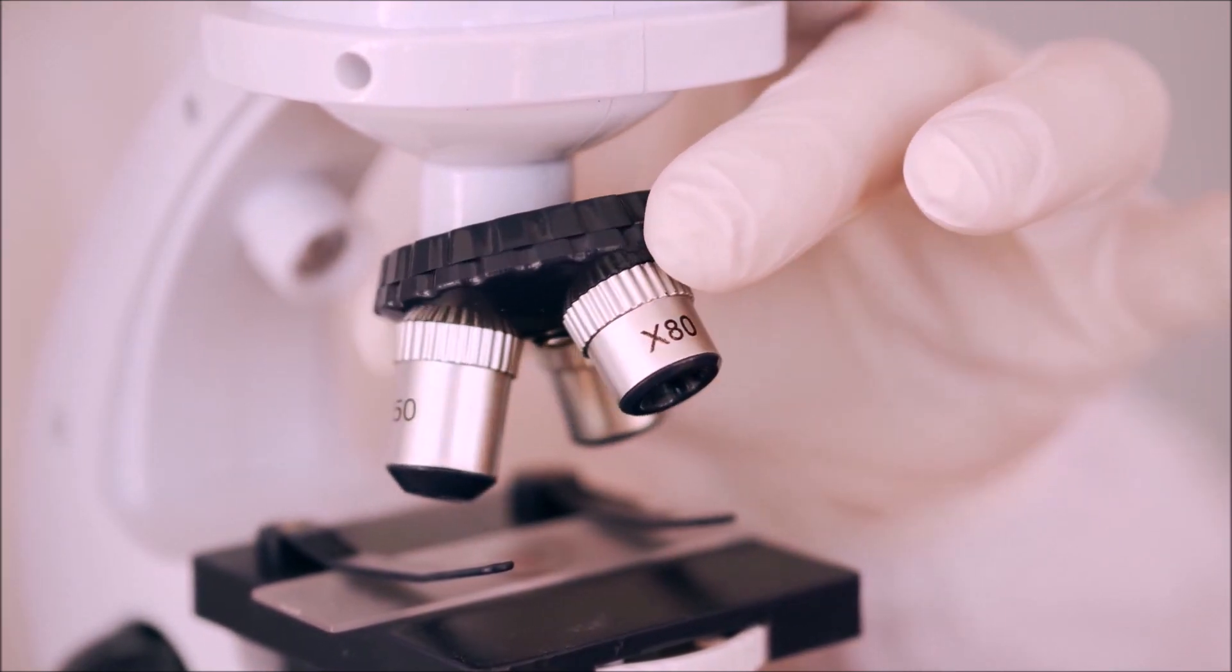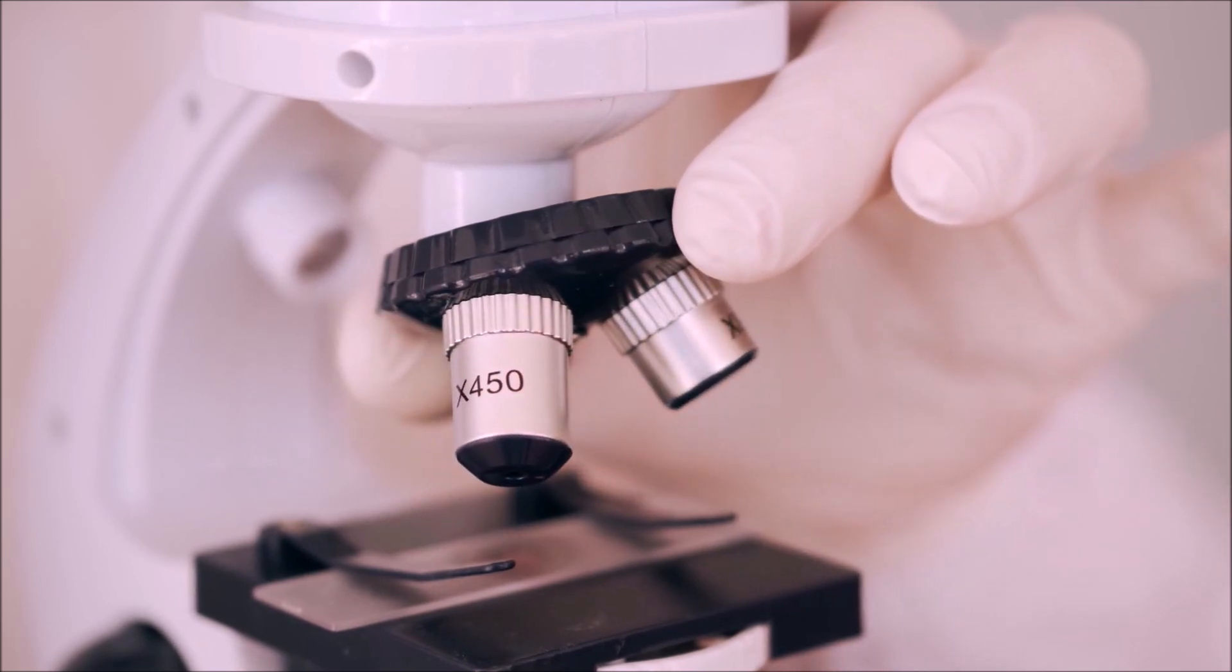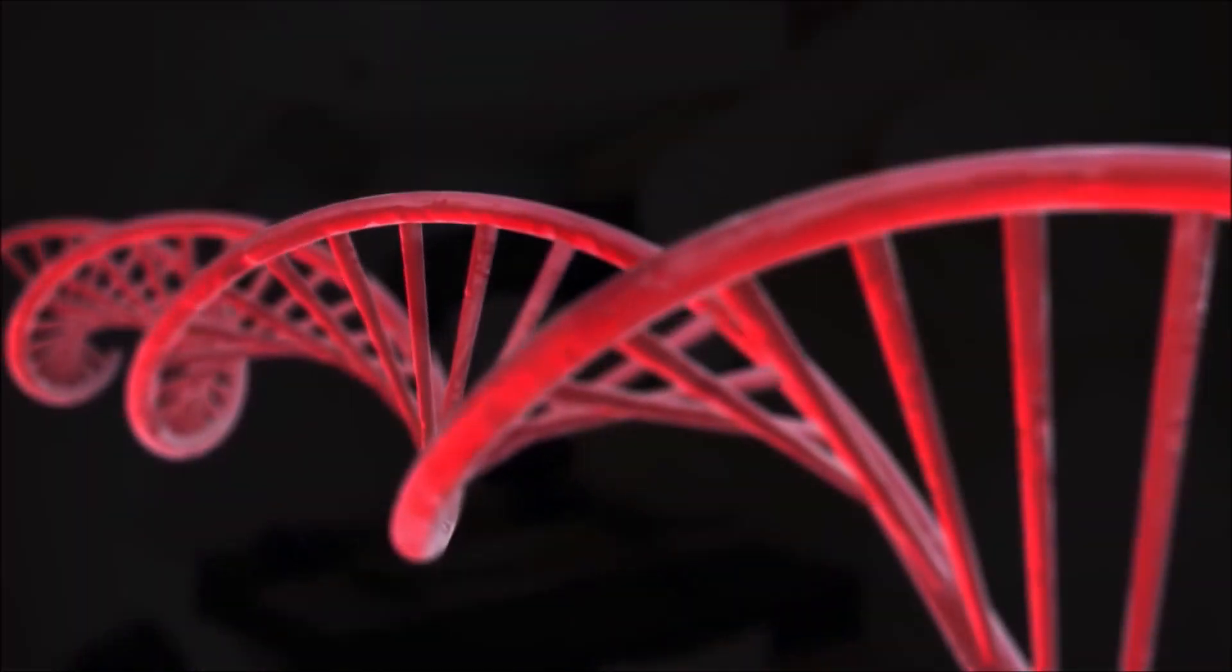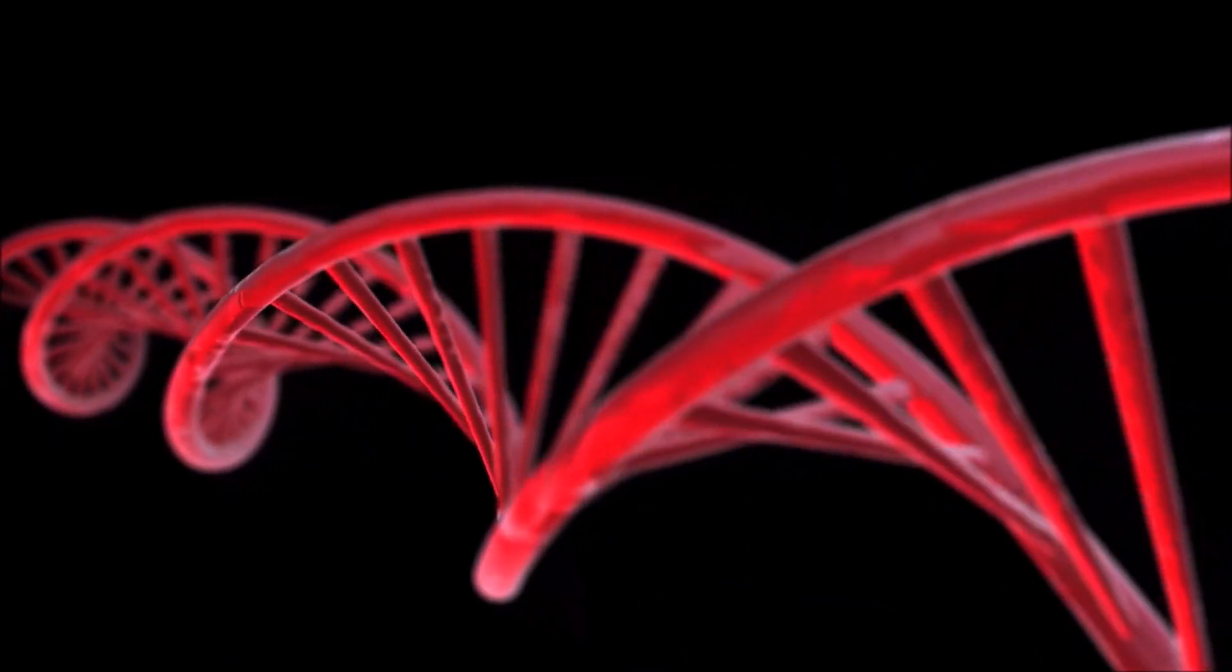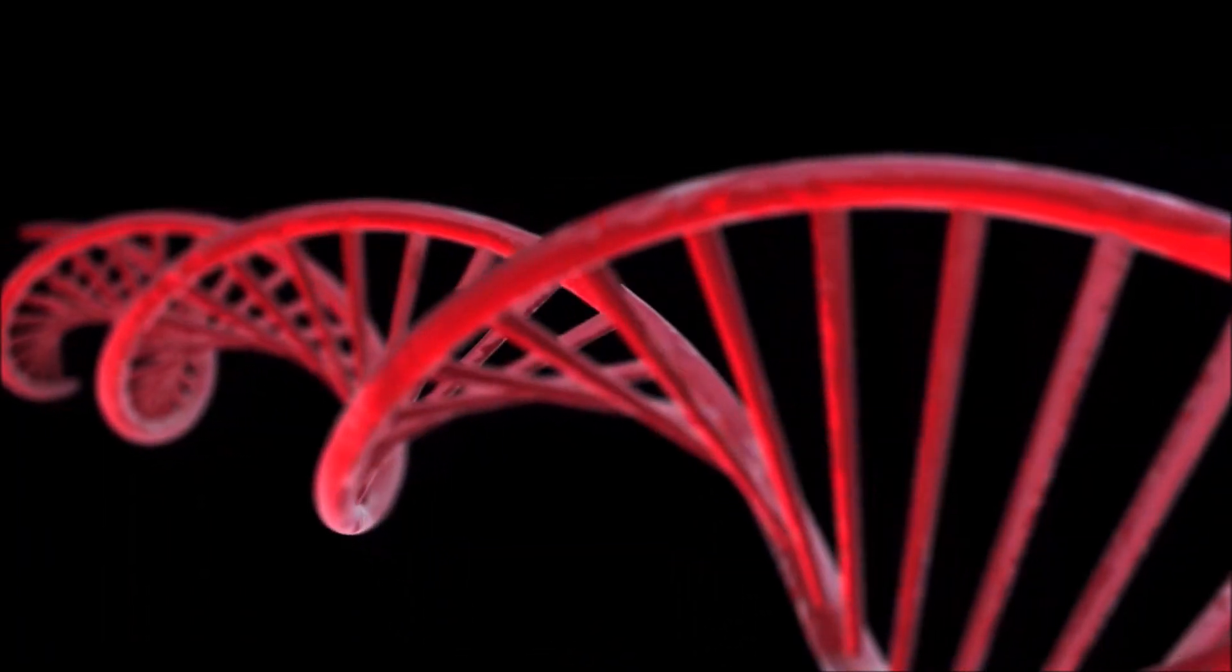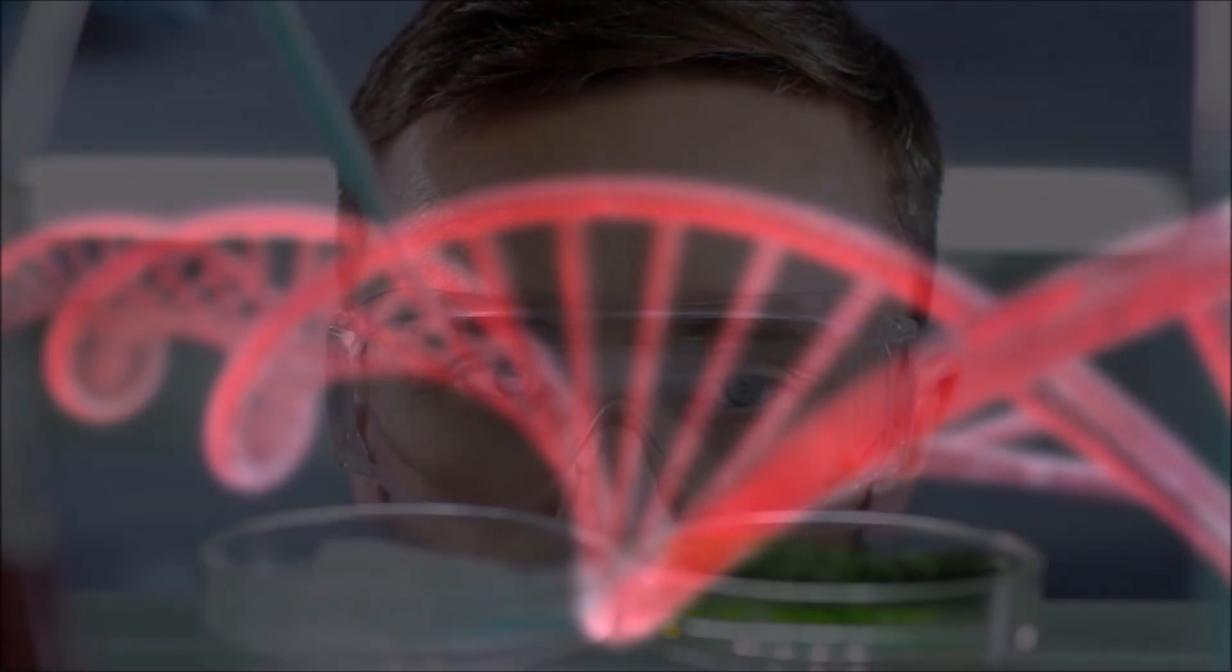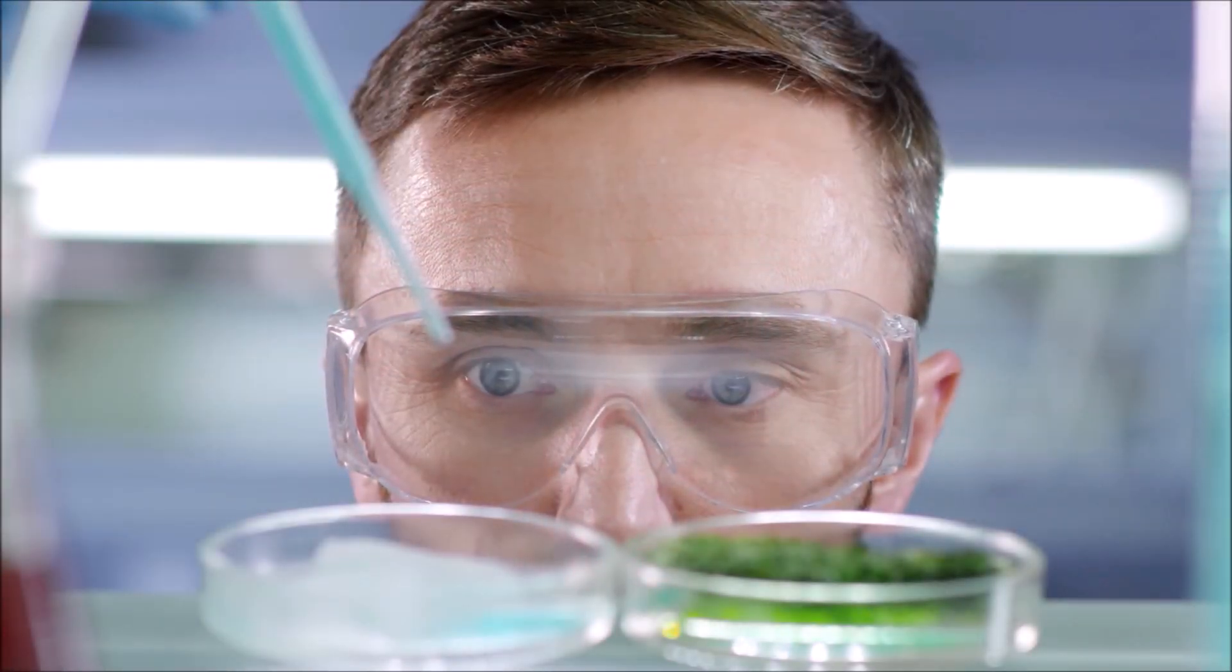Sperm and eggs, or sex cells, divide through a mechanism known as meiosis. During this process, the DNA is condensed into their neat chromosome packages, and the chromosomes are pulled to opposite sides of the cell, which then divides into two new cells.